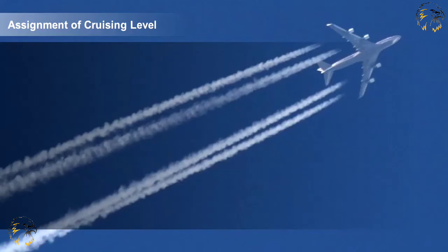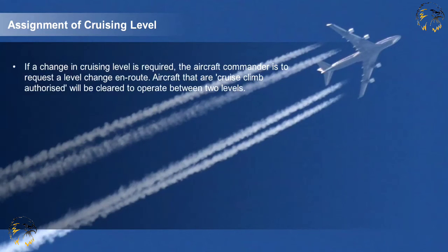An area control centre will normally allocate only one cruising level to an aeroplane for flight in the control area or for flight entering another control area. If a change in cruising level is required, the aircraft commander is to request a level change en route. Aircraft that are cruise climb authorised will be cleared to operate between two levels.